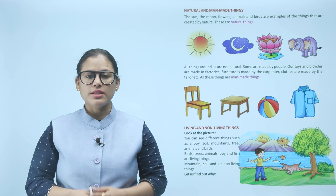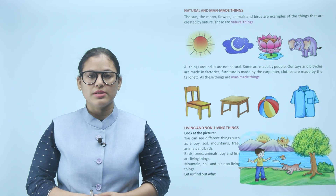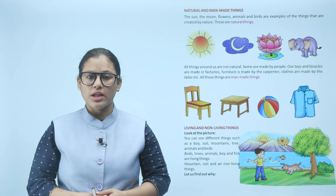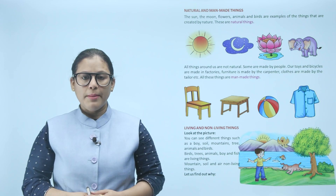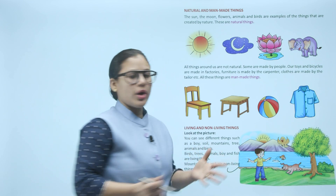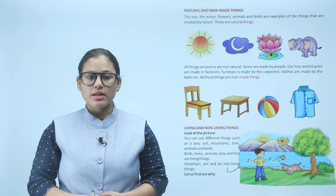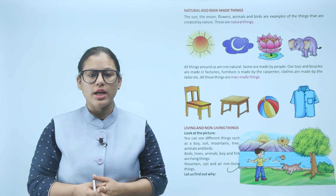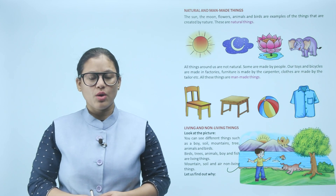Living and non-living things: look at the picture — you can see different things such as a boy, soil, mountains, trees, animals, and birds. Birds, trees, animals, boy, and fish are living things. Mountains, soil, and air are non-living things. Yeh sari living things hain jabki mountain, soil, aur air non-living things hain.